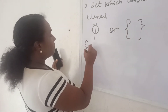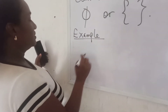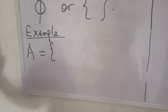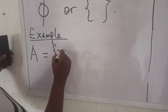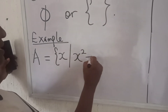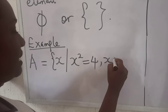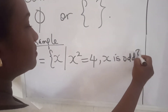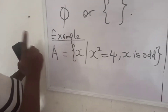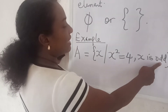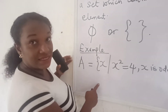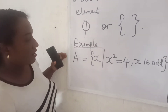Let's look at one example of an empty set. If we have a set A which is the set of all x such that x squared is equal to 4 and x is odd, this set is an empty set. Why? Because there is no odd number that when you square it you will get 4.